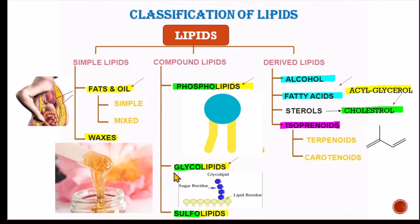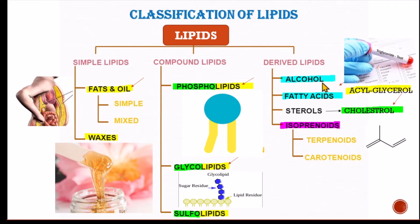Next is glycolipid — 'glyco' is for carbohydrates. When carbohydrates combine with lipids, we get glycolipid. In derived lipids, sterols and isoprenoids are included. When alcohol and fatty acids combine and form a linkage, we call it acylglycerol or triglyceride — 'tri' means three; when glycerol (alcohol) joins with three fatty acid chains, it forms a triglyceride. Sterols include cholesterol, which we will discuss further.